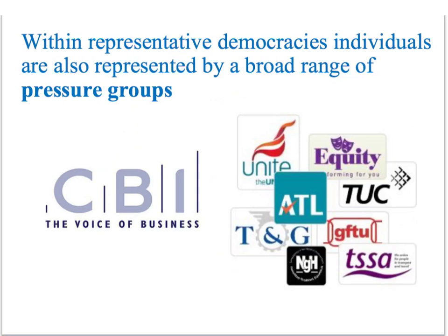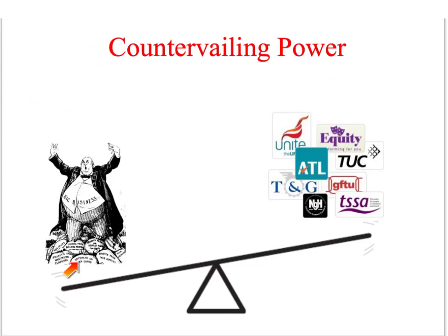Another way in which power bubbles up from the grassroots is through the existence of pressure groups — organisations that try to influence public opinion and the policies of the state. Although some pressure groups represent the interests of the rich and powerful, such as the CBI, there are lots of other pressure groups that represent other types of groups within society. For pluralists, this means that the power of big business is balanced out by the power and influence of other pressure groups representing different groups, including trade unions.